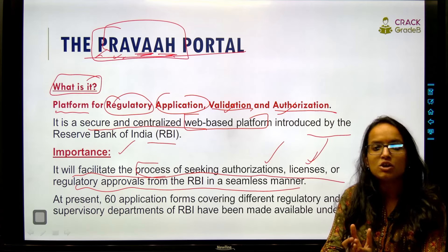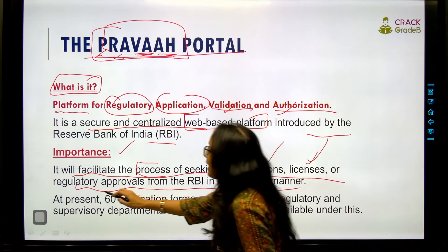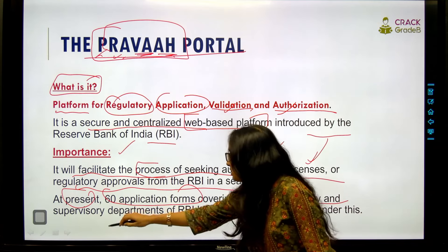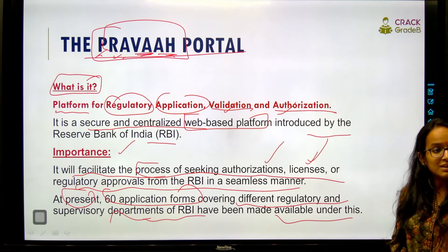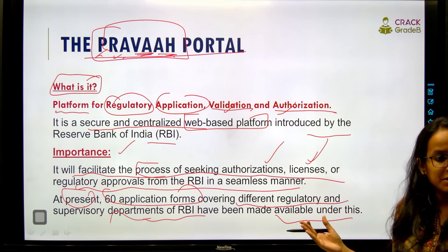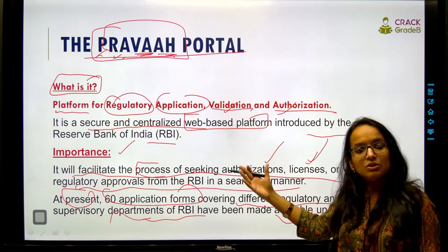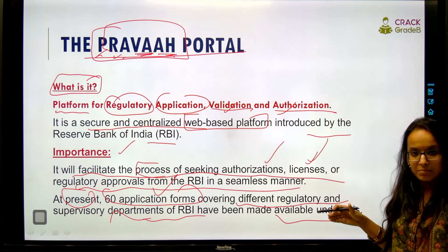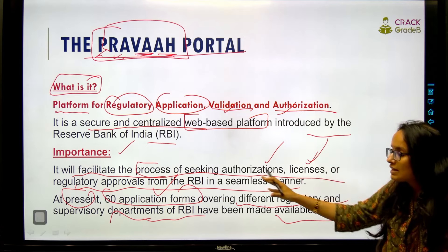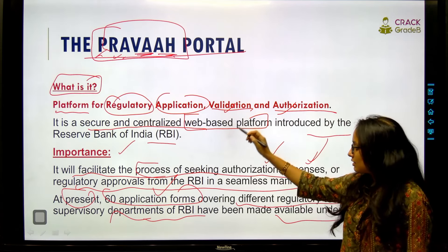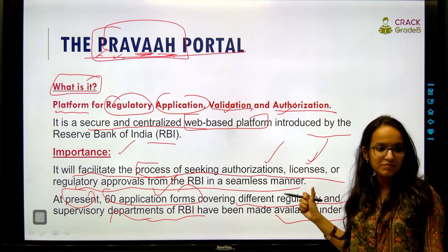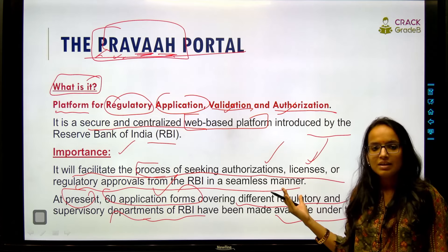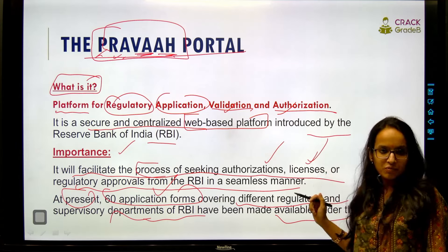At present, there are almost 60 application forms covering different regulatory and supervisory departments of RBI, which have been made available under this portal. So entities and individuals can easily get these things done from PRAVAHA. It's a very good initiative by RBI making regulatory processes seamless and less complicated.